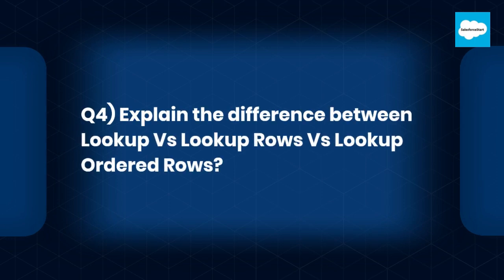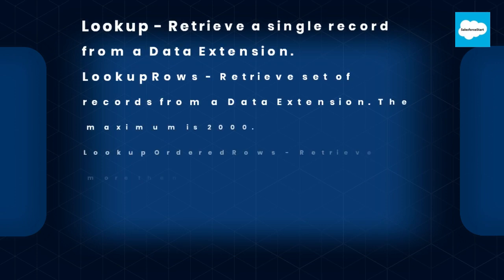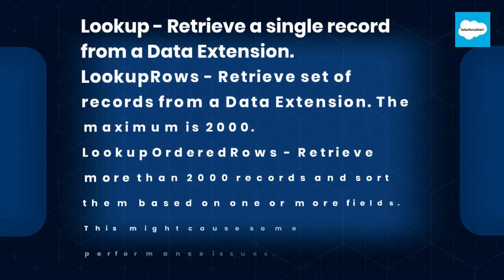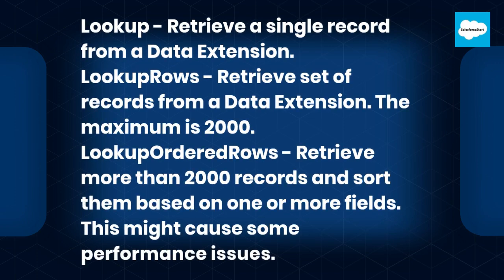Q4 – Explain the difference between Lookup, Lookup Rows, and Lookup Ordered Rows. Lookup – Retrieve a single record from a data extension. Lookup Rows – Retrieve a set of records from a data extension; the maximum is 2000. Lookup Ordered Rows – Retrieve more than 2000 records and sort them based on one or more fields. This might cause some performance issues.